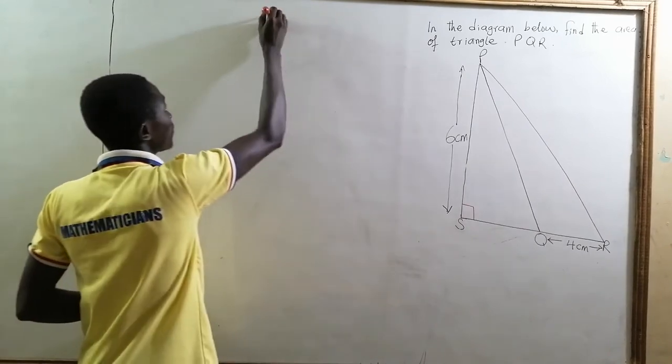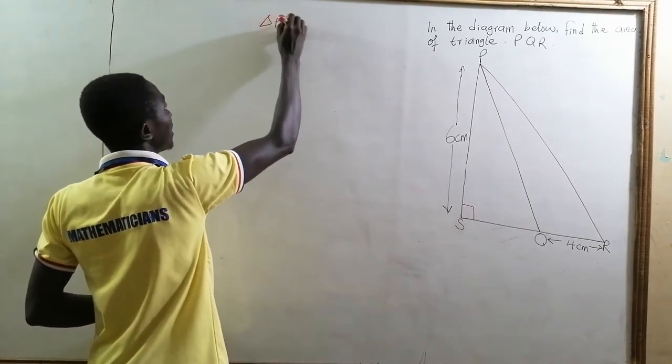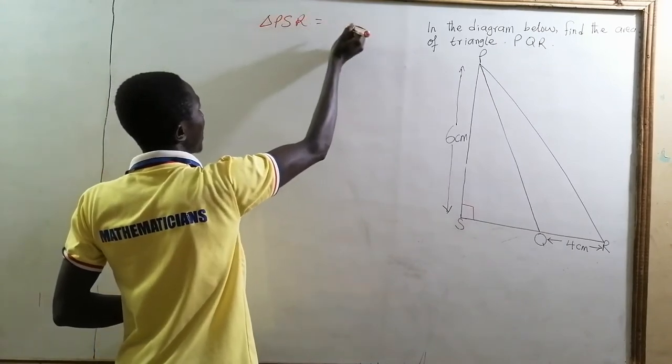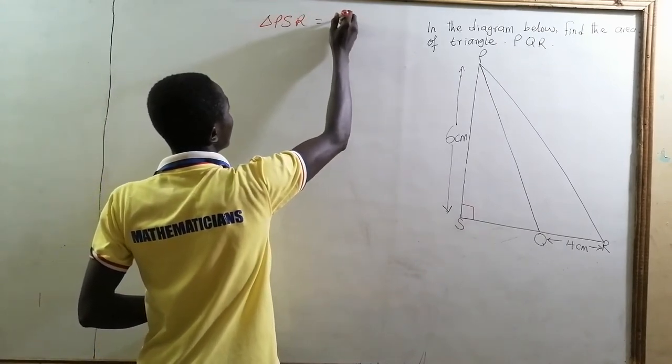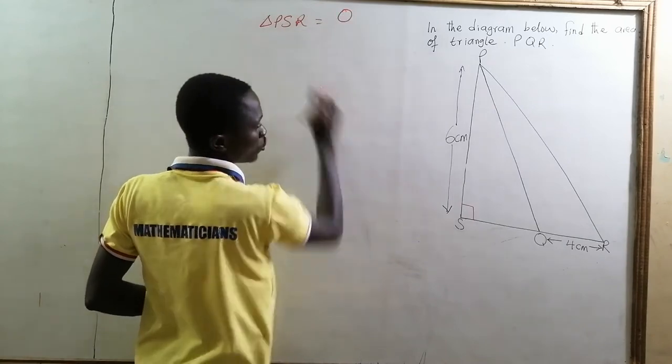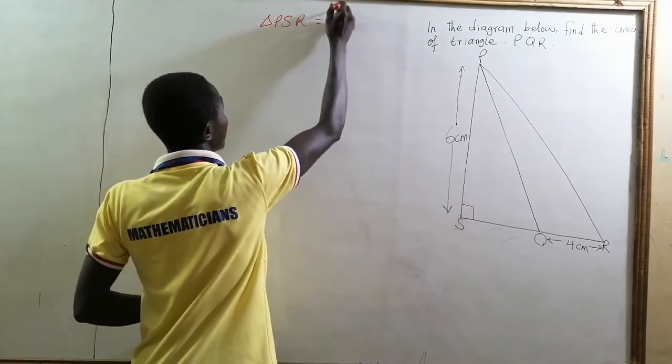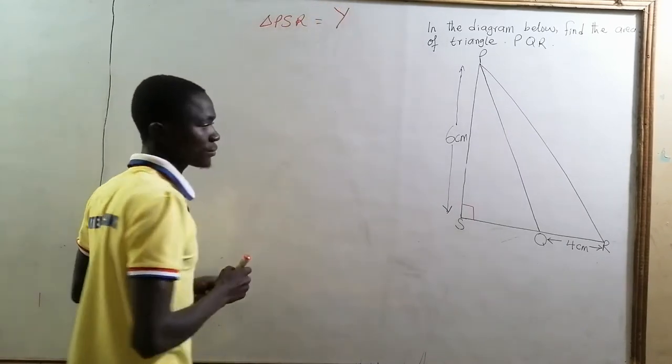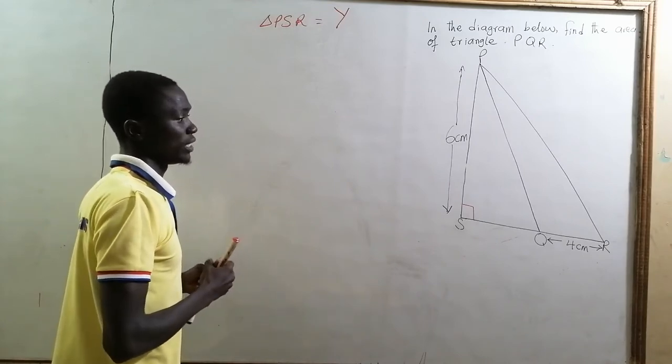Let us denote the area of triangle PSR by, say, Q. No, we have Q here. So let's take capital Y as the area of triangle PSR.